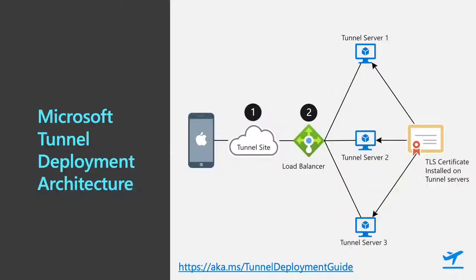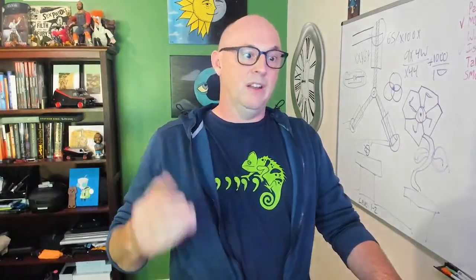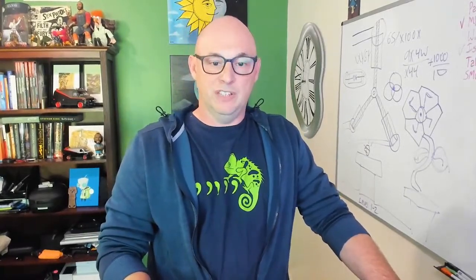The second part is the load balancer itself. Most deployments, the client will pick up the site, connect to the load balancer, and then the load balancer will distribute the load to one or more servers inside. The number of servers is completely dependent on the scale needs — depending on the number of clients and concurrent connections you need to support, you'd deploy one or more servers. That's fully documented in the deployment guide, and we give you the formulas to determine how many servers you need.